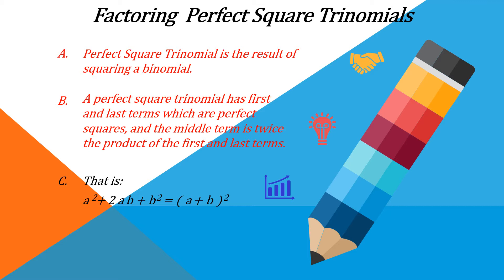The middle term is twice the product of the first term and the last term. As you can see, the first term is a². We just take the square root of a², which is a. And here is b². For the last term, this is b squared. We take the square root of b squared, which is b. And then we apply this quantity squared.